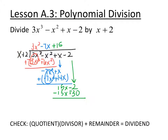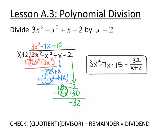Bring down the negative 2. What do I have to multiply x by to get 15x? I need to multiply it by 15. Multiply back: 15 times x is 15x, and 15 times 2 is positive 30. Subtract through — distribute the negative. 15x minus 15x goes to 0. Negative 2 minus 30 is negative 32, so I have a remainder of negative 32. We can write it just like the long division: the quotient is 3x squared minus 7x plus 15, plus the remainder over the divisor, which is minus 32 over x plus 2.